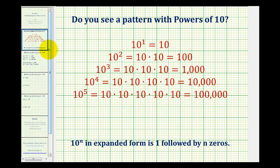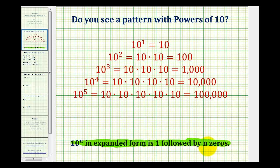Let's first see if we can identify a pattern for powers of 10. Well, 10 to the first would be equal to 10. 10 to the second would be 10 times 10, which equals 100. 10 to the third, we'd multiply three factors of 10, which is equal to 1,000. 10 to the fourth would be four factors of 10, which is equal to 10,000. And 10 to the fifth would be five factors of 10, which is equal to 100,000. If we count the number of zeros here, notice it matches the exponent on 10. So in general, 10 to the power of n in expanded form is one followed by n zeros.